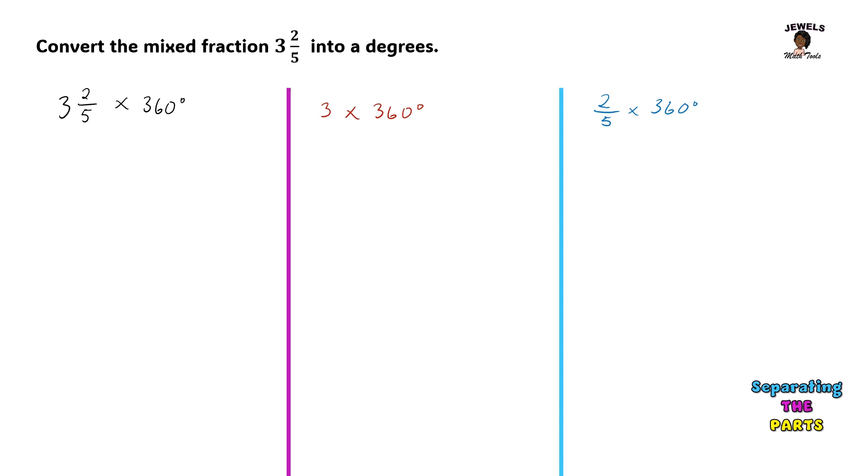After we have multiplied the whole number part to our 360 and our fractional part to 360, we will then come back and add the two parts together to find the full sum of our fraction 3 and 2/5 when it is converted to degrees. This is just an alternative method that you can use to change your fraction to degrees.